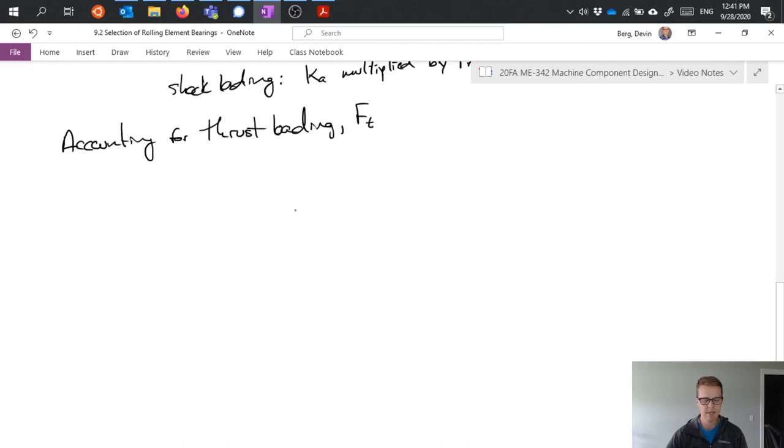We can make some adjustment to account for thrust loading. I'm going to call the thrust load F sub T. To do that, we can introduce what we call an equivalent load and substitute it for F sub R. The same equations can then be used, but now using an equivalent load. The equations vary depending on what type of bearing we're talking about, but I'm just going to show the equations for radial ball bearings.